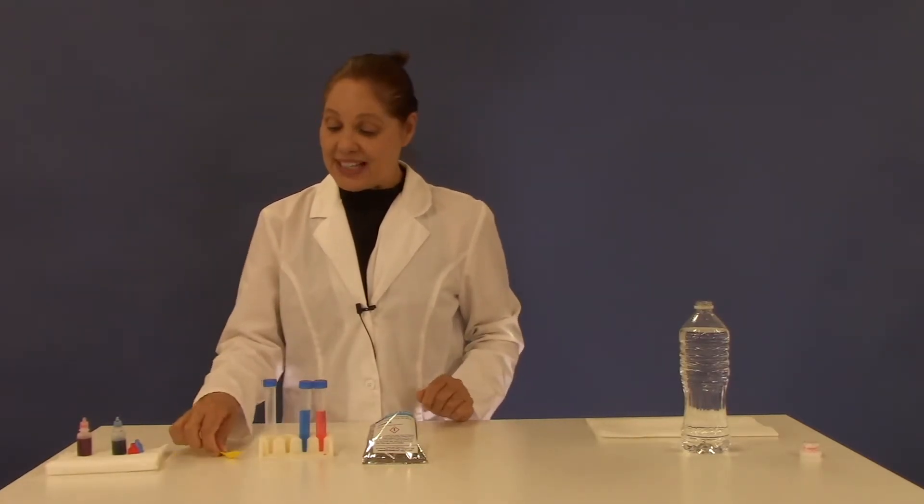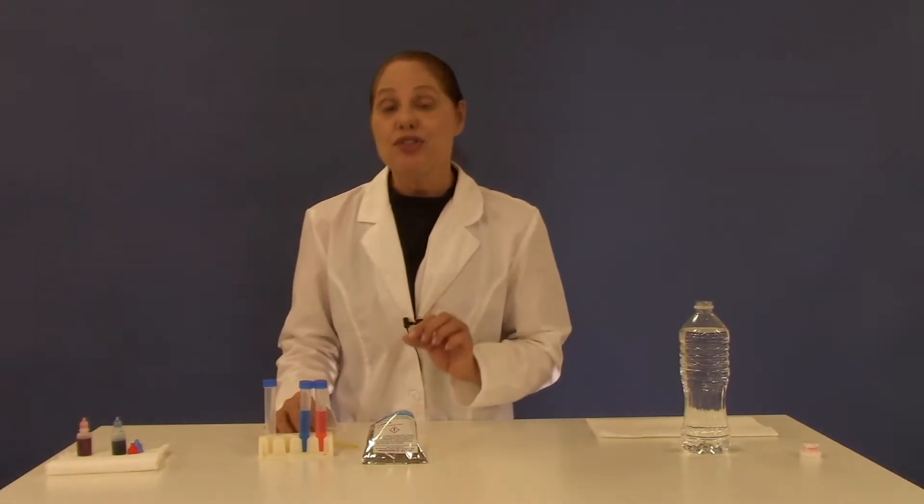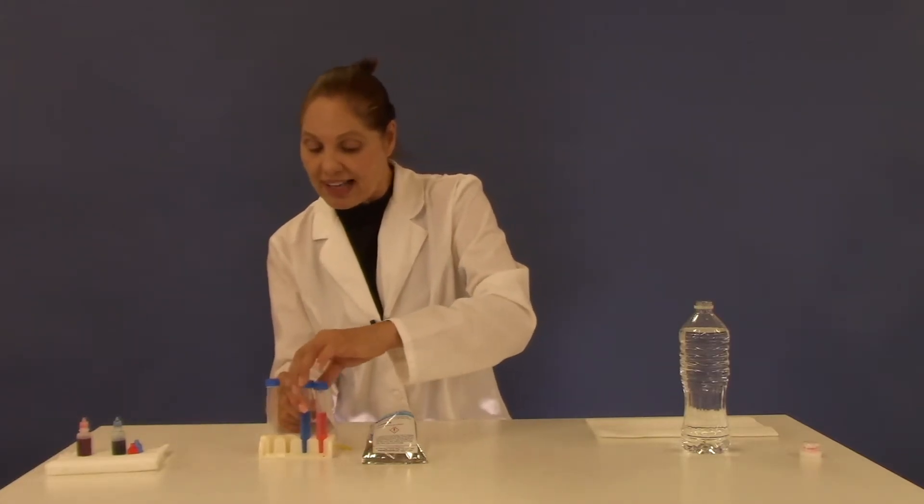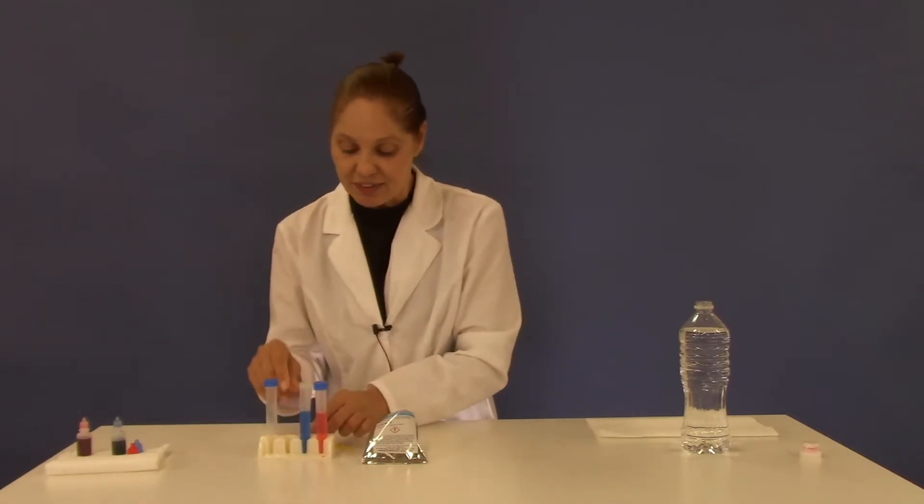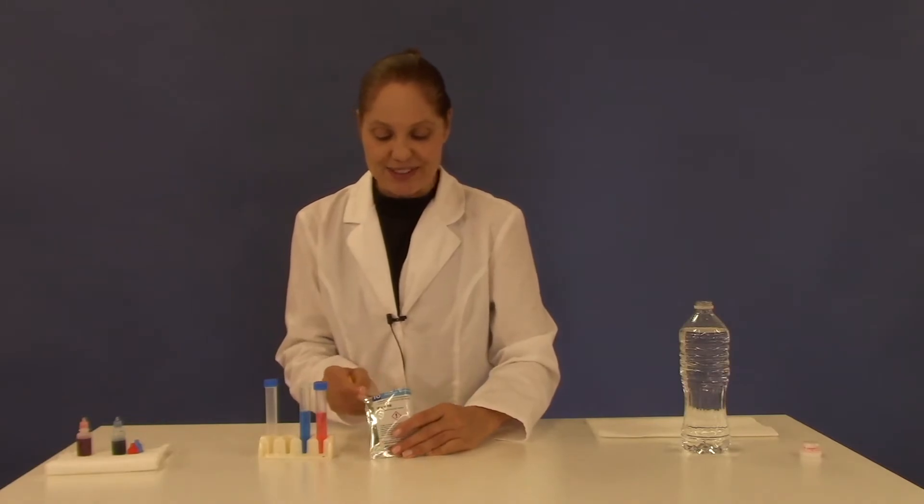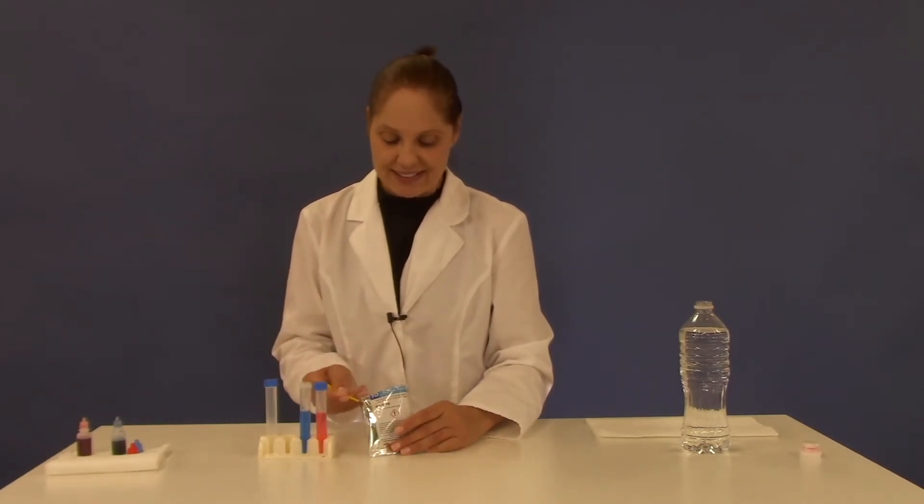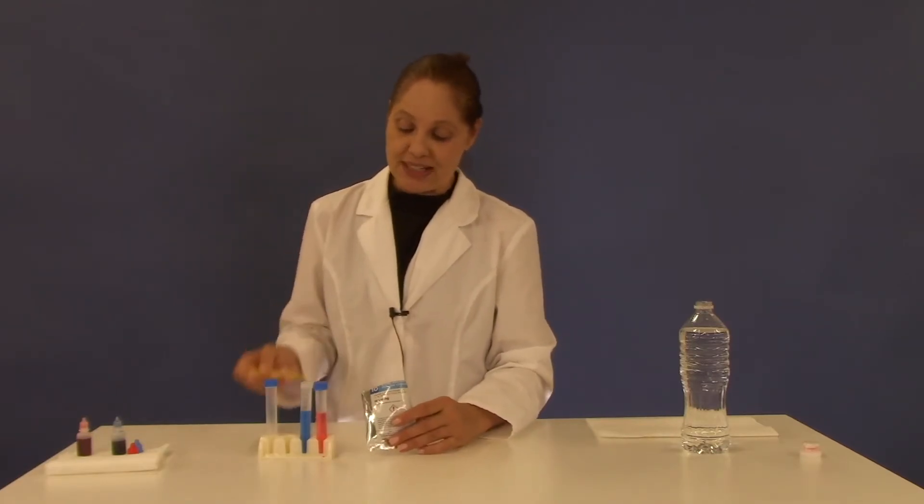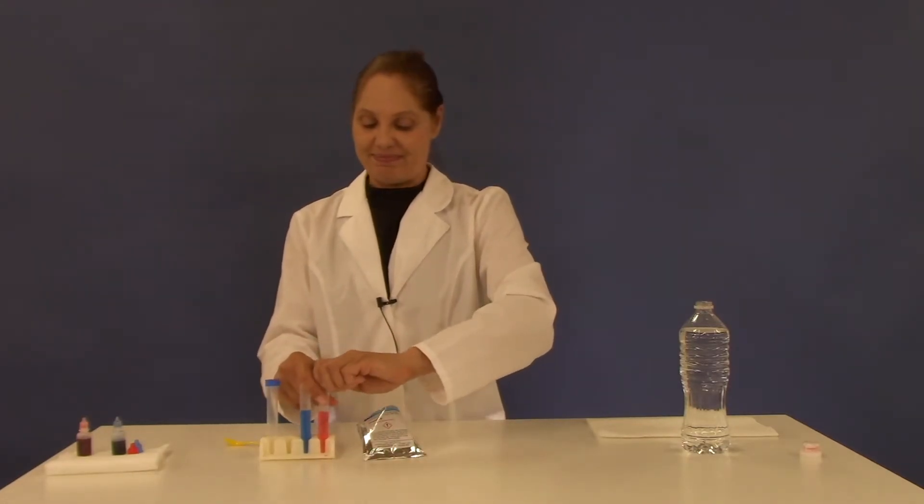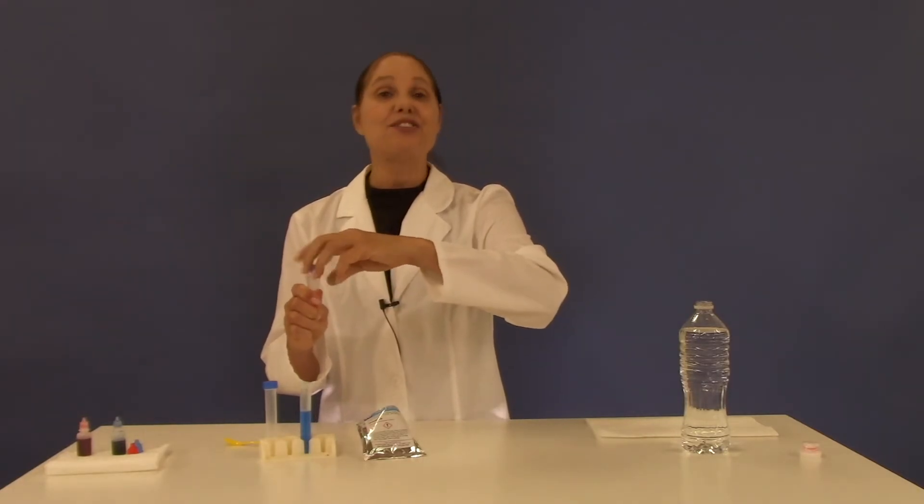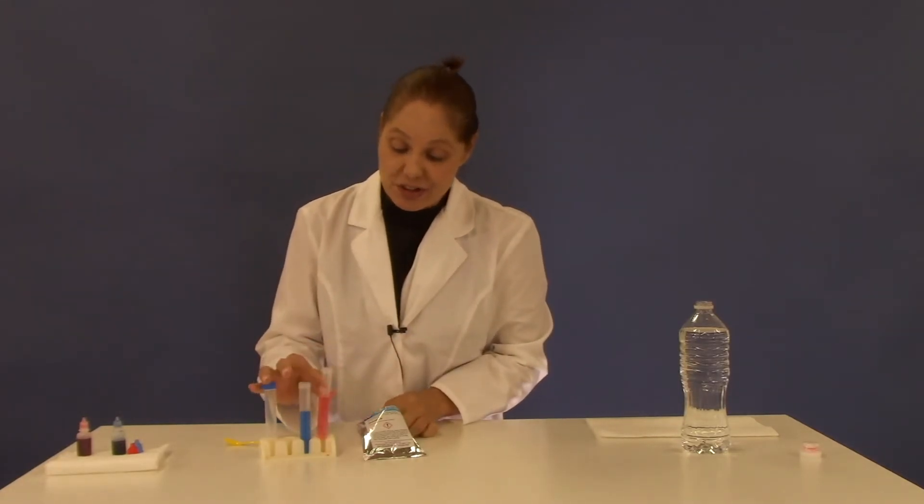Now, taking the small end of your yellow measuring spoon, you want to add two small level spoonfuls of the polymer crystals into each of the test tubes. So there's one, and now two into the blue test tube. And into the red test tube, I'm going to add two as well.